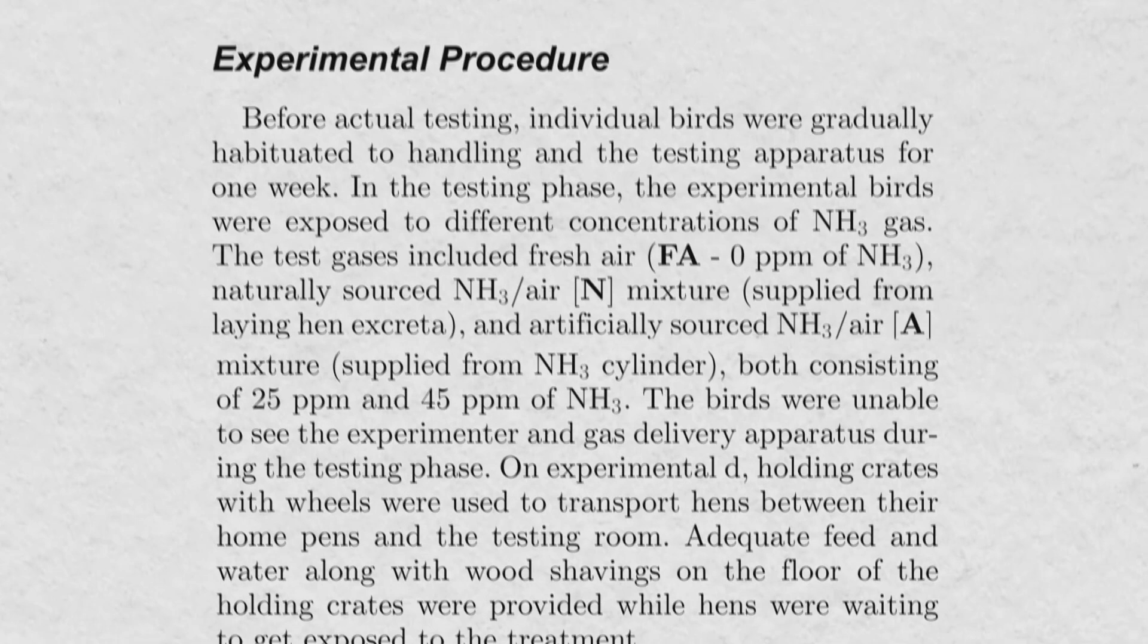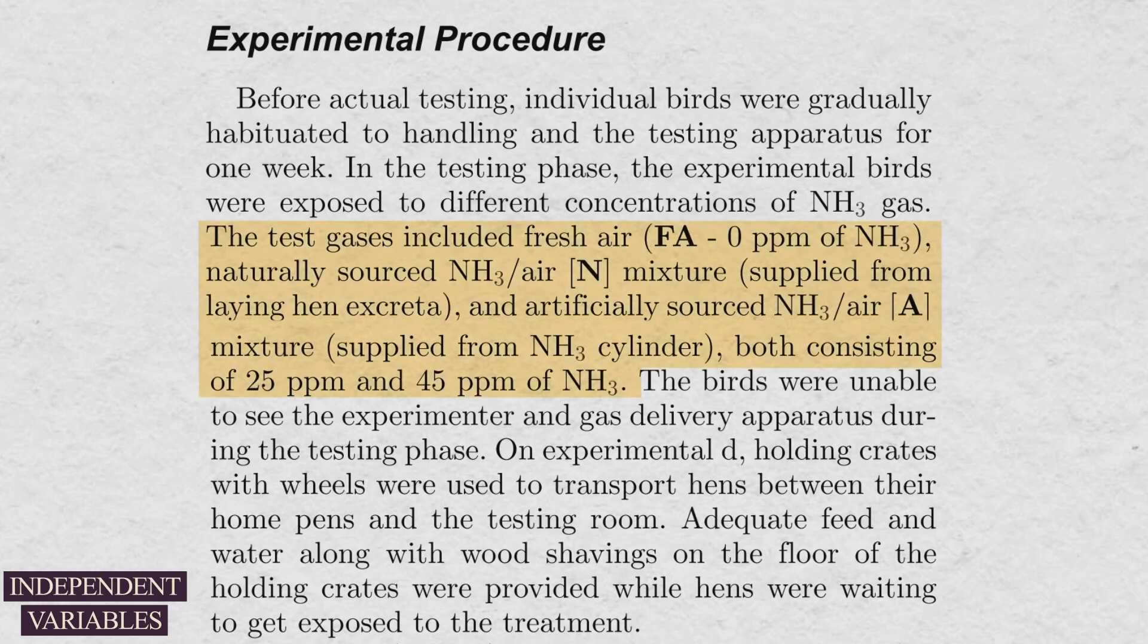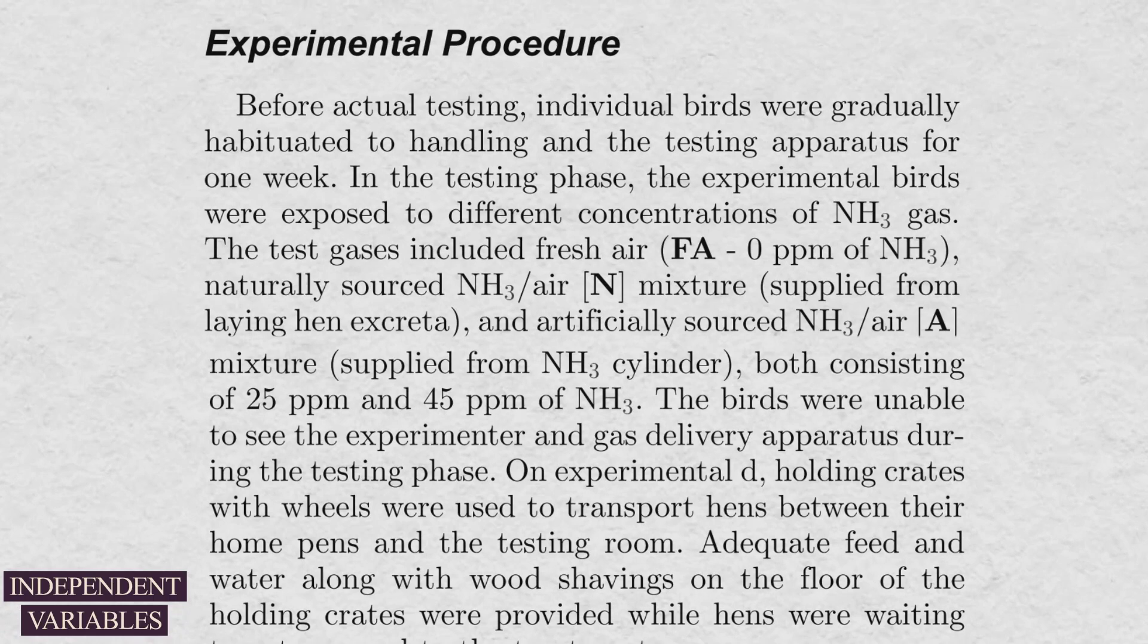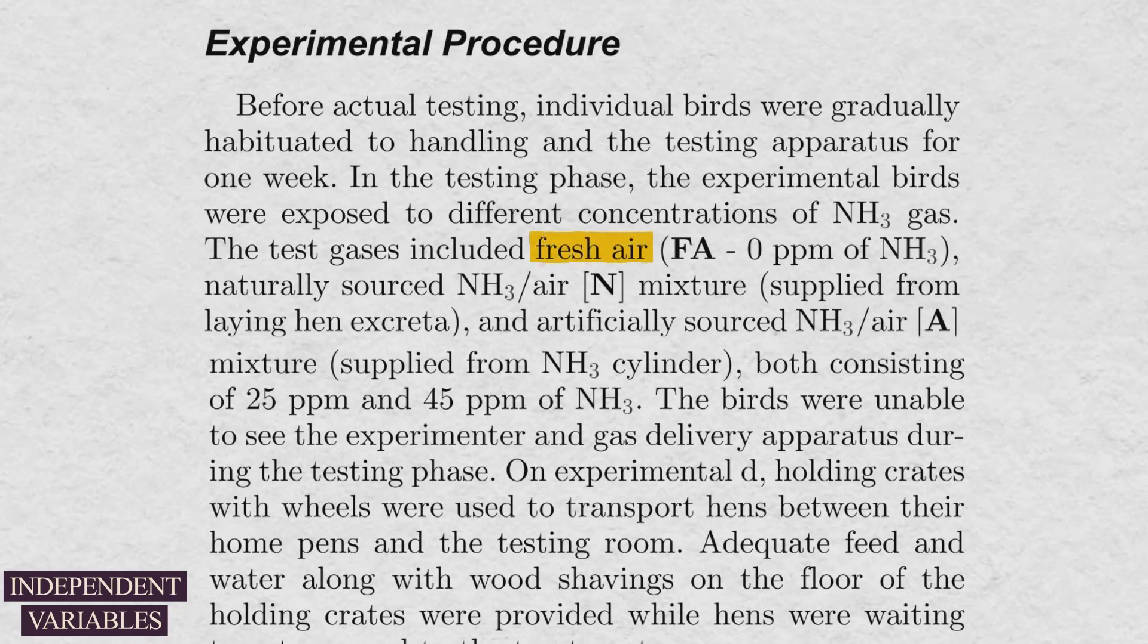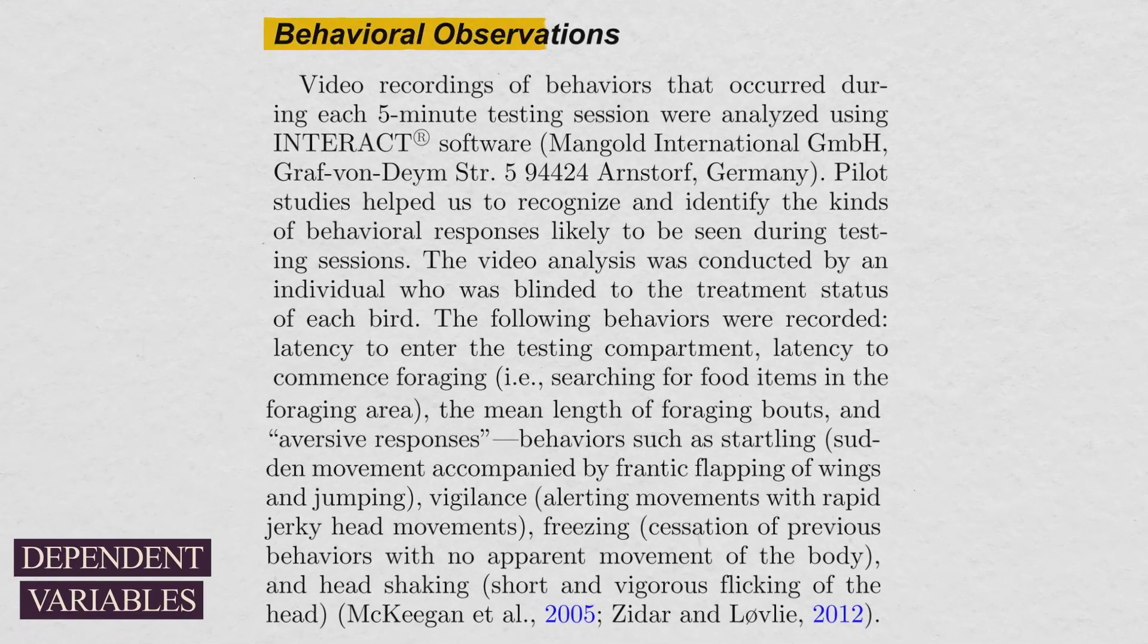If you go down, you can see experimental procedure here. You can see independent variables here, which are the treatments used in this study. As you can see here, treatments are fresh air and 25 and 45 ppm of ammonia created from different sources. If you go further down, you can see dependent variables here. Dependent variables in this study are the behaviors of laying hens to different treatments as highlighted here.